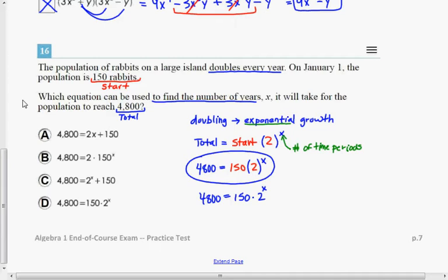So that's the equation that you could solve to find the x value, the number of years, that it would take to get a population of 4,800. And so that would be d.